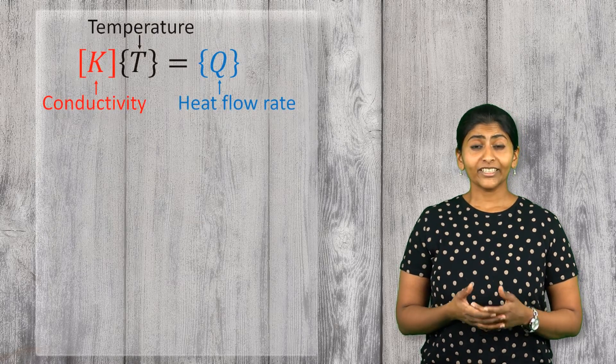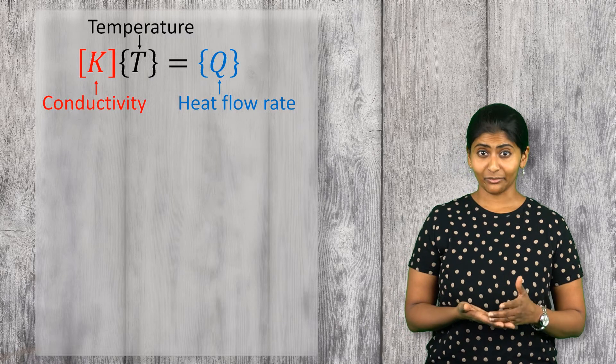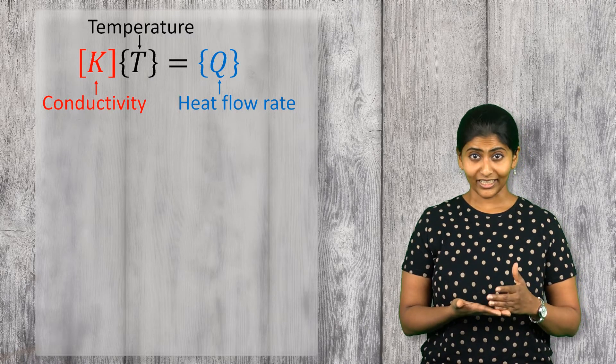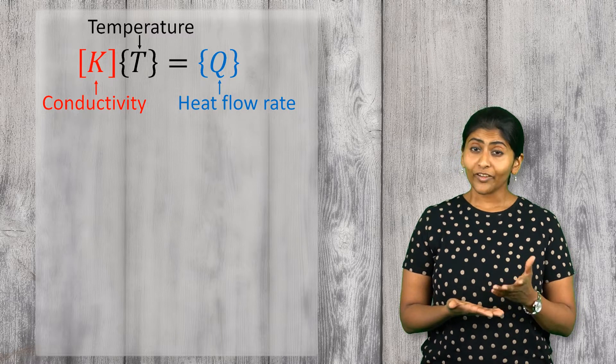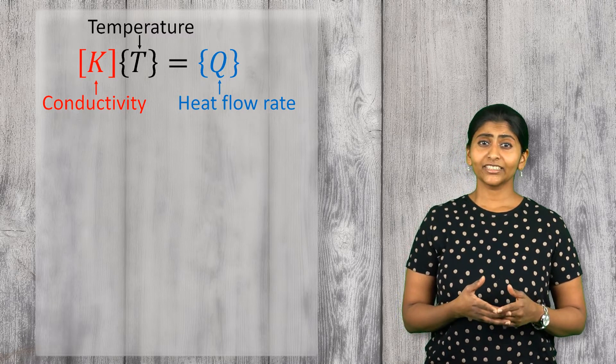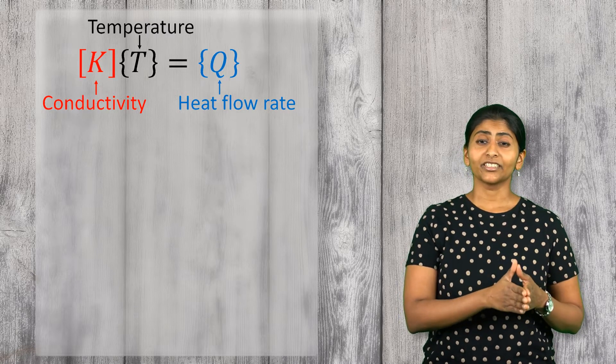Let's have a look at Fourier's law in finite element format. When the conductivity is temperature-dependent, it means that the conductivity matrix K in this equation varies with temperature. If we plot the relationship between heat flow and the temperature, it becomes a non-linear curve.